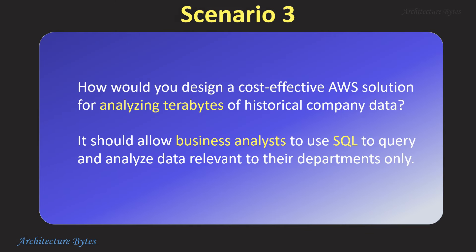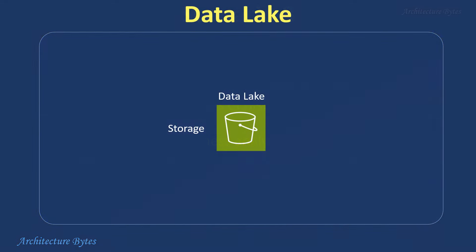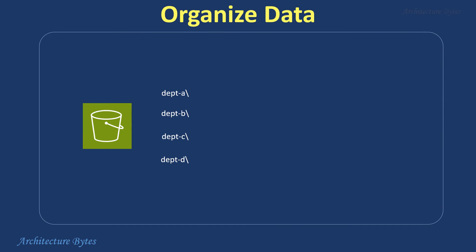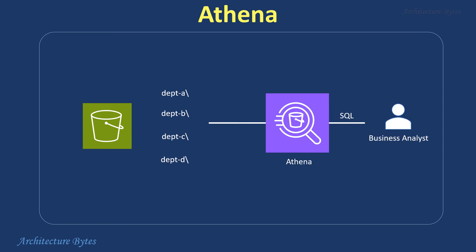How would you design a cost-effective AWS solution for analyzing terabytes of historical company data? It should allow business analysts to use SQL to query and analyze data relevant to their departments only. Store the company's historical data in Amazon S3 as a data lake. Organize the data into separate folders based on departments to restrict access. Utilize features like server-side encryption to ensure data security. Use Amazon Athena for analytics, which would allow business analysts to query and analyze data using SQL.